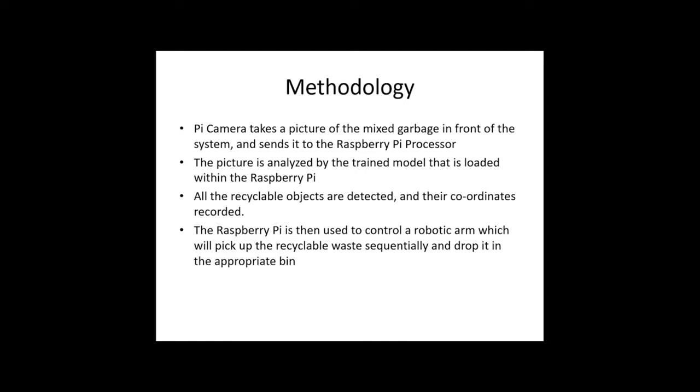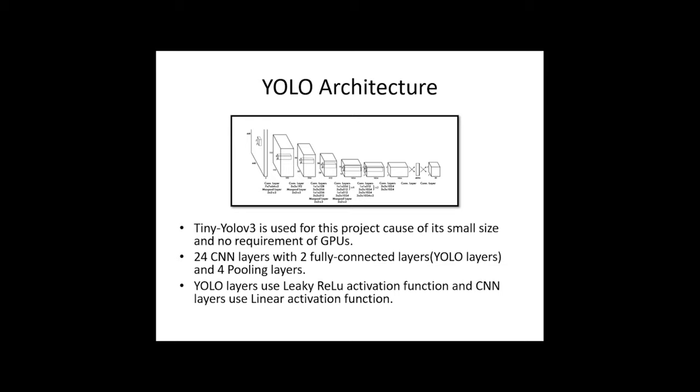The image processing algorithm that we've used to detect the objects is called YOLO, or You Only Look Once. We've used the tiny version so as to not need graphic processor units to run the process. YOLO is a convolutional neural network consisting of 12 layers and two fully connected layers, which are the YOLO layers.